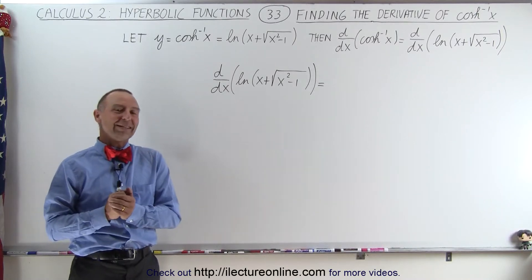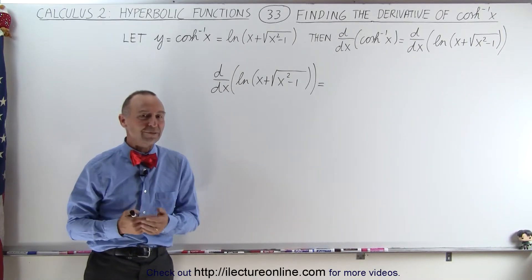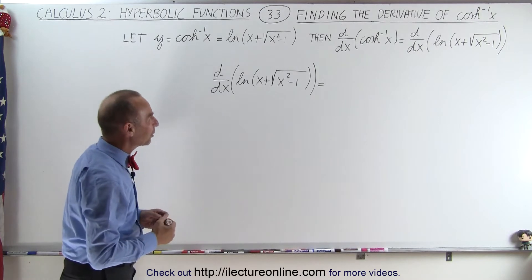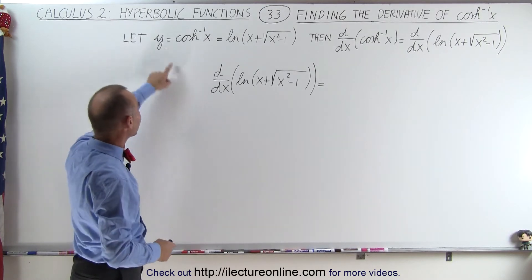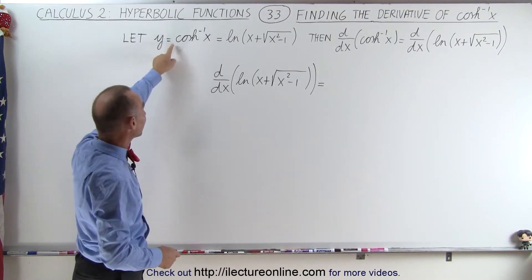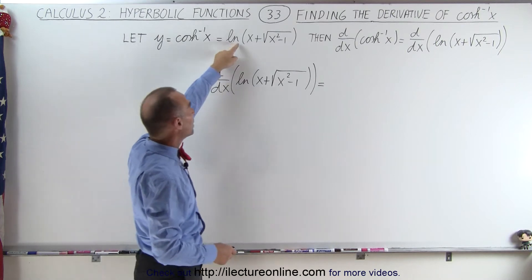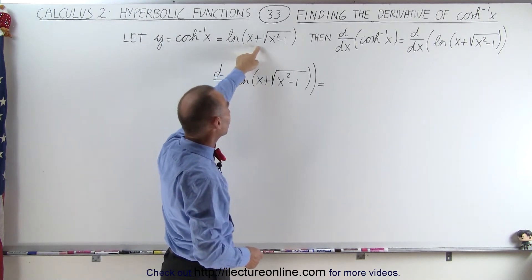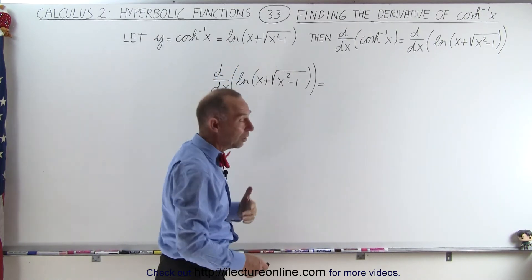Welcome to Electronline. Now let's find the derivative of the inverse hyperbolic cosine. We have the definition of the inverse hyperbolic cosine as the natural log of x plus the square root of x squared minus 1.